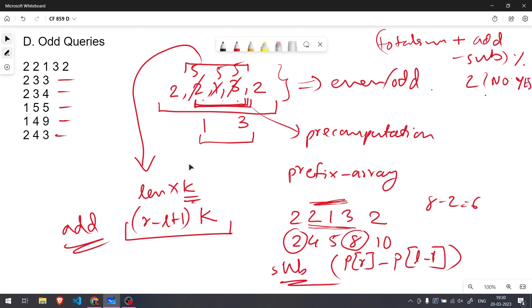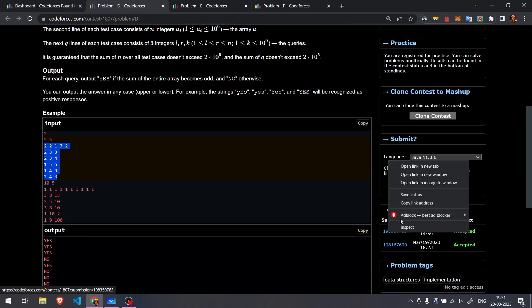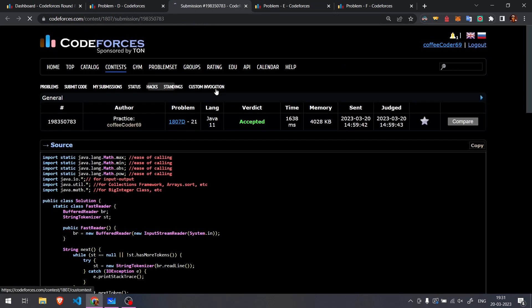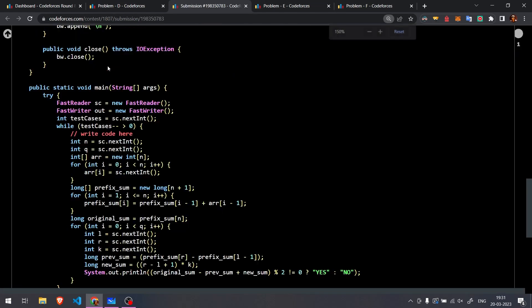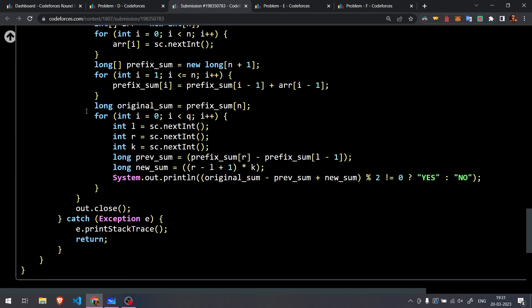So let's look at the code. I'll just check my accepted solution. So basically over here I've taken N and Q the number of queries and then the array itself and then we have created a prefix sum array and then we have also taken the original sum which is nothing but the prefix sum of the last index.